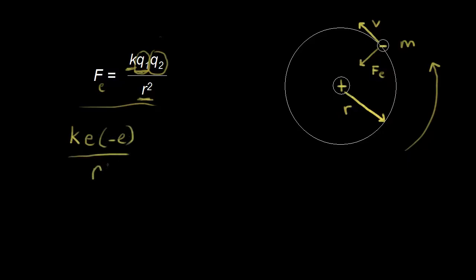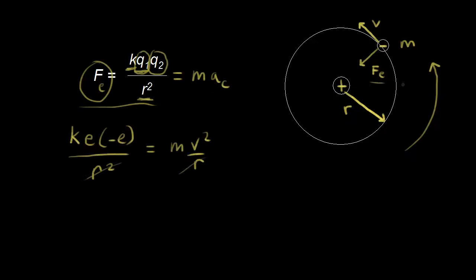Force is equal to mass times acceleration using Newton's second law. M is the mass of the electron, and this is the centripetal acceleration since we're talking about a centripetal force. The centripetal acceleration is equal to V squared over R, so we plug in M times V squared over R. We can cancel out one of the R's, and since we only care about the magnitude of the force, we can drop the negative sign. This simplifies to KE squared over R on the left, and MV squared on the right.